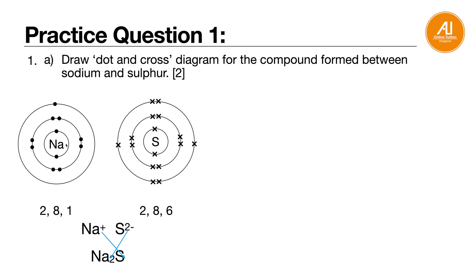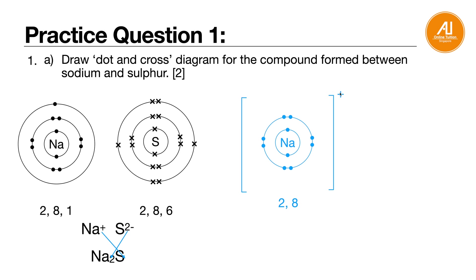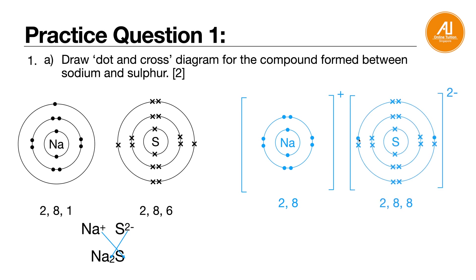Sodium will lose 1 electron, so it becomes 2,8 with a square bracket plus. Sulfur will take in 2 electrons — 1 here and 1 here — so the overall charge will be 2 minus. It becomes 2,8,8 and is stable. Because the formula is Na2S, you have 2 sodium ions, so put 2 in front, or draw the sodium ion 2 times. This is your final answer.